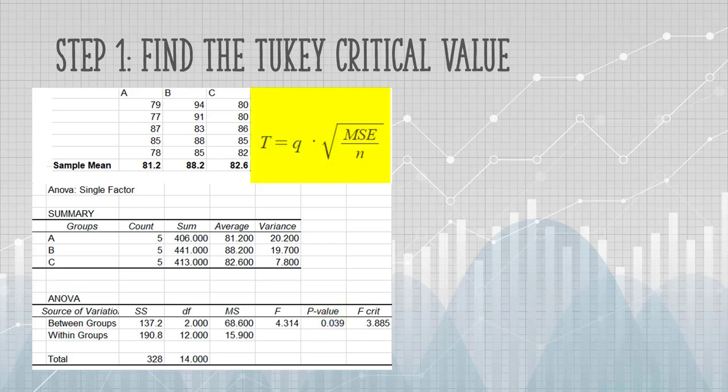So here's the formula to find the Tukey critical value. The first thing we want to do is find that Q. First note the number of treatments. We have three treatments, A, B, and C.